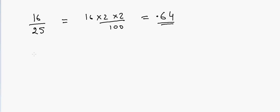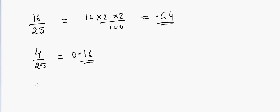Again, if I have 4 divided by 25, that will be equal to: double of 4 is 8, and double of 8 is 16 — so the answer is 0.16.